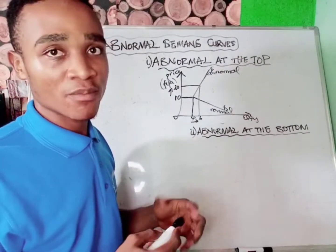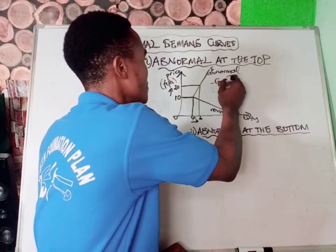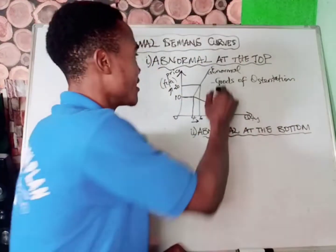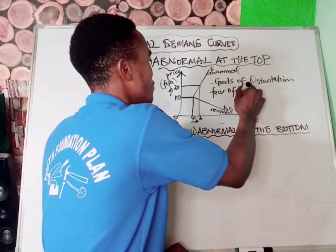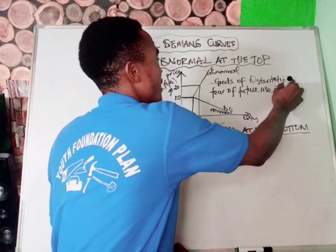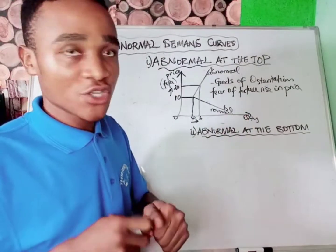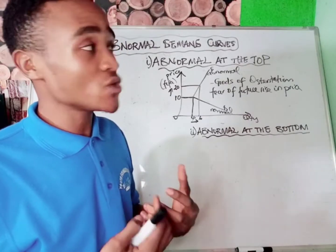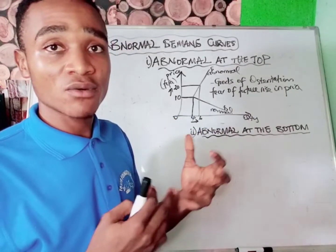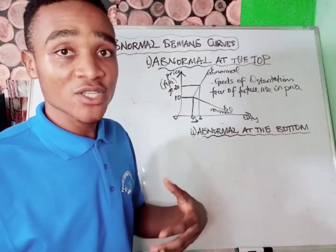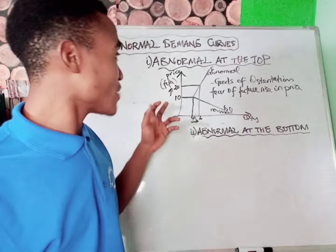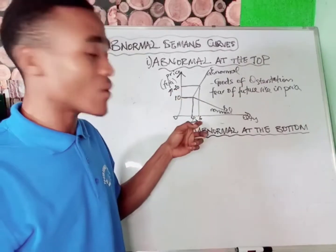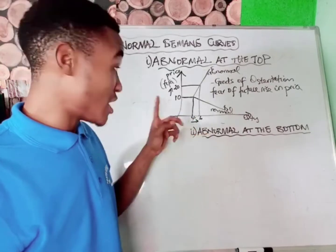There are two reasons that explain abnormality at the top. The first is goods of ostentation — also referred to as goods of snob appeal or Veblen goods. These are goods which people buy because of prestige. Examples include expensive cars and expensive jewellery. People buy these goods because they carry prestige and will not buy them if their prices are falling. So at a higher price of 20 francs CFA, people buy more quantities — from their usual four they now buy six.